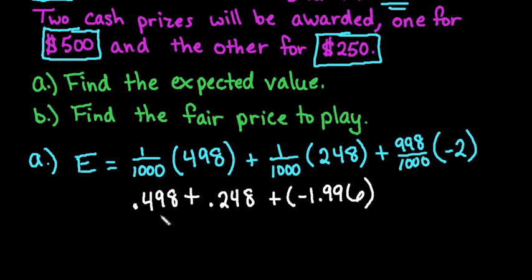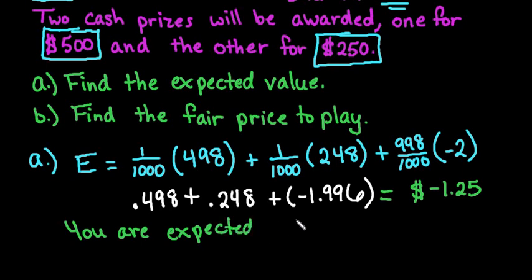So then we would just plug these into our calculator, add them all up, so I would take 0.498 plus 0.248 plus negative 1.996. And we end up with an expected value of negative $1.25. So you are expected to lose $1.25. So anytime that you end up with a negative expected value, that means that you are more likely to lose the money. Nobody actually loses $1.25, but that is the expected value. So in the long run, that's what you would be expected to lose.